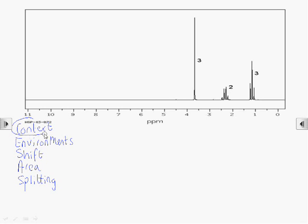We start by looking at the context. What do we know already about the molecule? In this case, the question would tell us that it's an ester.